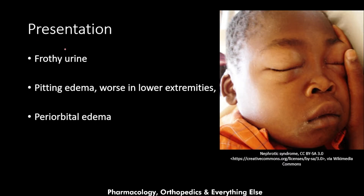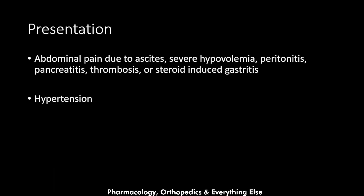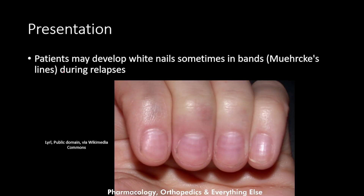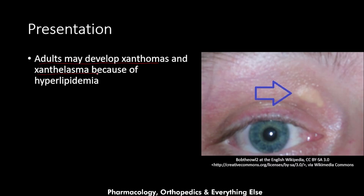During an FSGS relapse, patients present with frothy urine, pitting edema worse in the lower extremities, and periorbital edema. They may also present with abdominal pain due to ascites, severe hypervolemia, peritonitis, pancreatitis, thrombosis, or steroid-induced gastritis, as well as hypertension. Patients may develop Muehrcke's lines — white banded nails during relapses. Adults may develop xanthomas and xanthelasmas due to hyperlipidemia.